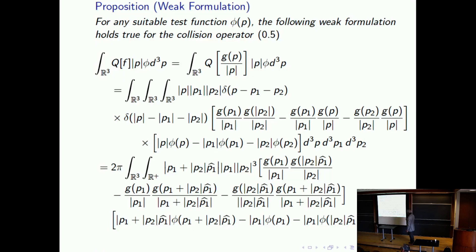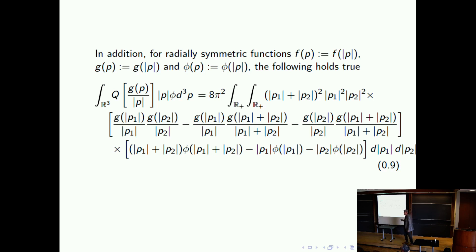To deal with this beast, the first step is to reduce to the radial case. When you do it in the radial case, everything is radial including the test function, and the equation becomes more tractable. But it is still terrible, because you have a product with positive quantities but also a difference which depends on the test function and doesn't have a sign. The quantity depending on the solution g can be arbitrary and is also a difference — it does not have a sign either. The question is what do you do with this kind of thing.